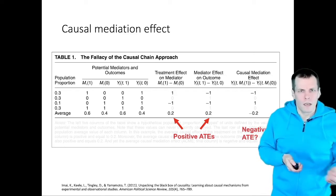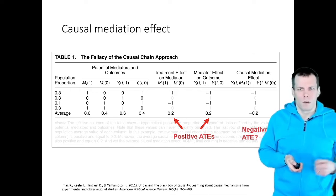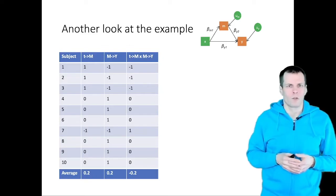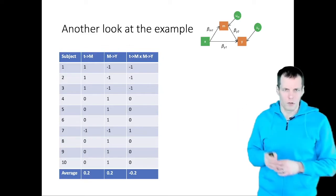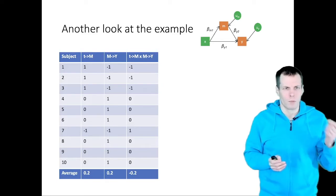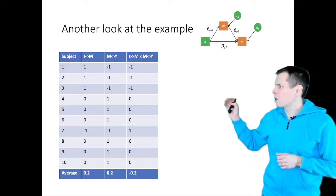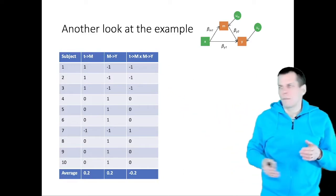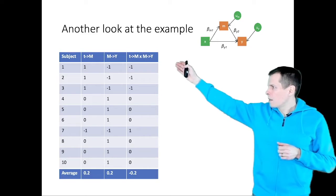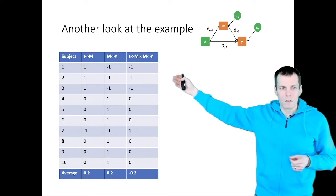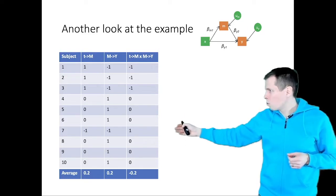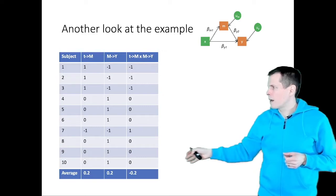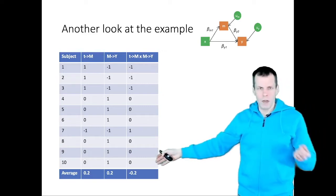Let's take another look at this example with a simulated population of 10 subjects. This is the mediation model with t to m, m to y, and then the product. For the first three subjects, the product of the two coefficients is 1; then we have zeros, minus ones, and more zeros. The average is minus 0.2. The product of coefficients approach works when the expected product equals the product of the expectations — that is, when beta_m1 and beta_y2 are independent at the individual level.